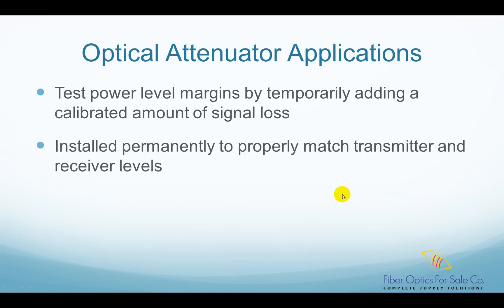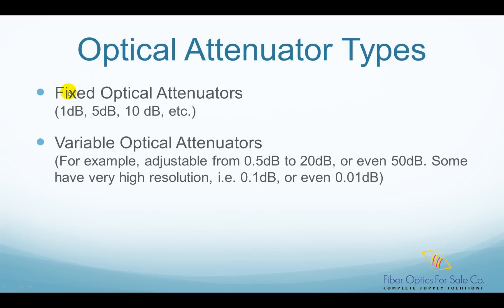Optical attenuators are typically classified as fixed or variable attenuators. Fixed attenuators have a fixed optical power reduction number, such as 1 dB, 5 dB, 10 dB, etc. Variable attenuators' attenuation level can be adjusted, such as from 0.5 dB to 20 dB or even 50 dB. Some variable attenuators have very fine resolution, such as 0.1 dB or even 0.01 dB.